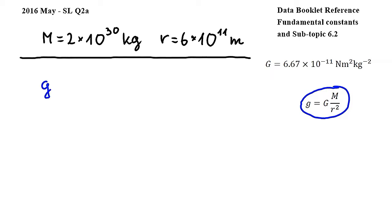Substituting, we get lowercase g is equal to capital G, which can be found in the fundamental constant section of the data booklet, and which is equal to 6.67 times 10 to the power of negative 11, multiplied by 2 times 10 to the power of 30,